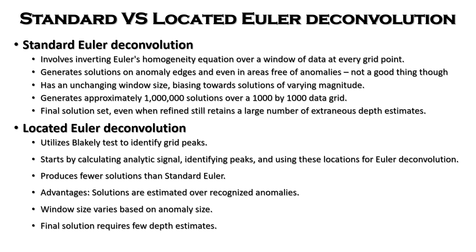It generates approximately a million solutions over a thousand by thousand data grid. For the final solution sets, even when refined, it still retains a large number of extraneous depth estimates. For the located Euler deconvolution, it utilizes the Blakely test to identify grid peaks. It starts by calculating analytical signal, identifying peaks, and using these locations for Euler deconvolution. It produces fewer solutions than the standard Euler deconvolution.